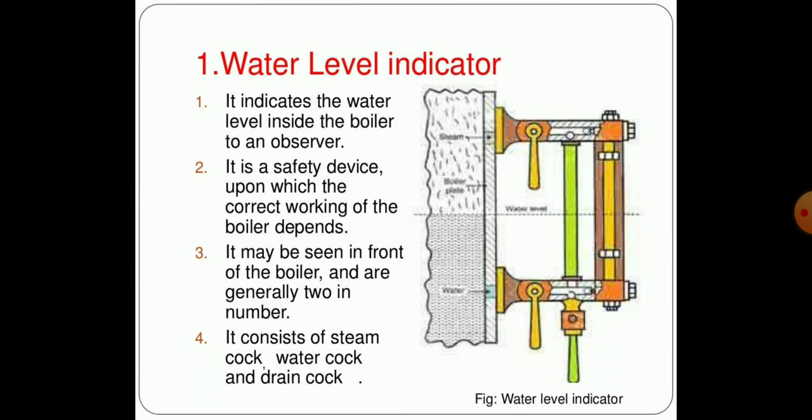First one, in front of your screen you can see the water level indicator. It indicates the water level inside the boiler to an observer. The level of water can be visible easily with the indicator. It is a safety device upon which the correct working of the boiler depends, showing the user or boiler attendant what is the level of water and it can be managed by controlling valves. It may be seen in front of the boiler and is generally two in number. It consists of steam cock, water cock, and drain cock.